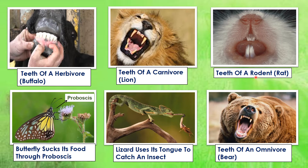Next are the rodents. Rodents have front teeth that they use to bite and nibble their food. Nibble means taking small bites of food. Squirrels, rats and mice are all rodents — they nibble grains, nuts and fruits.